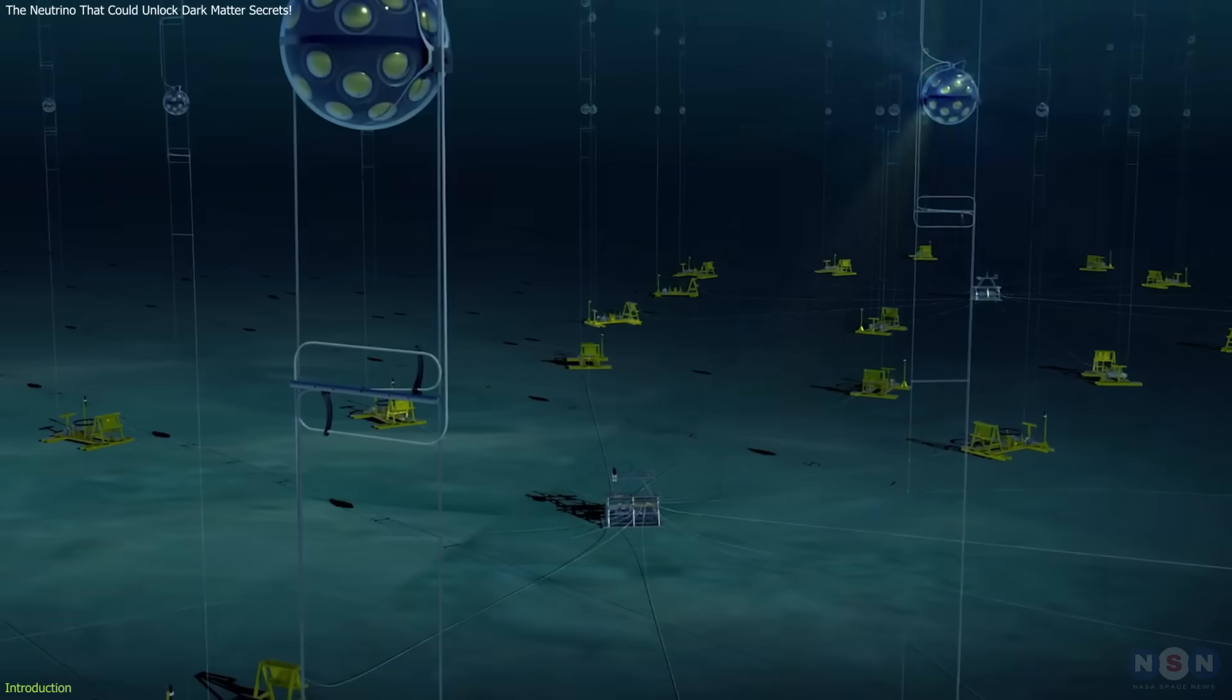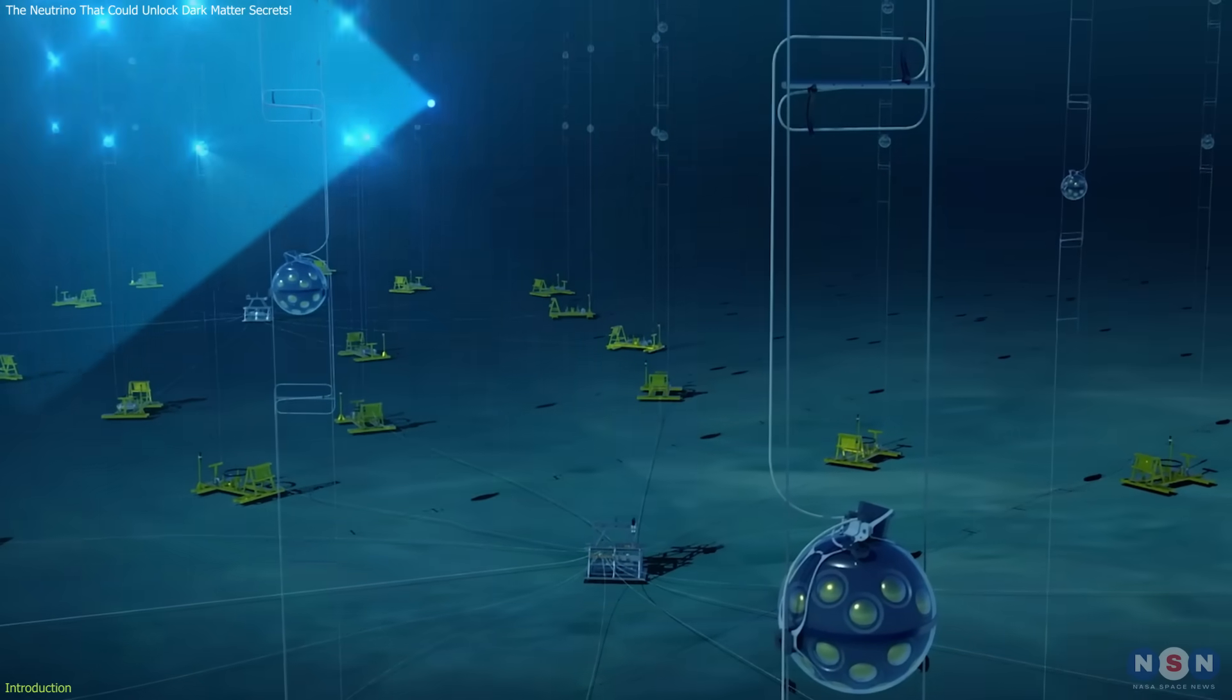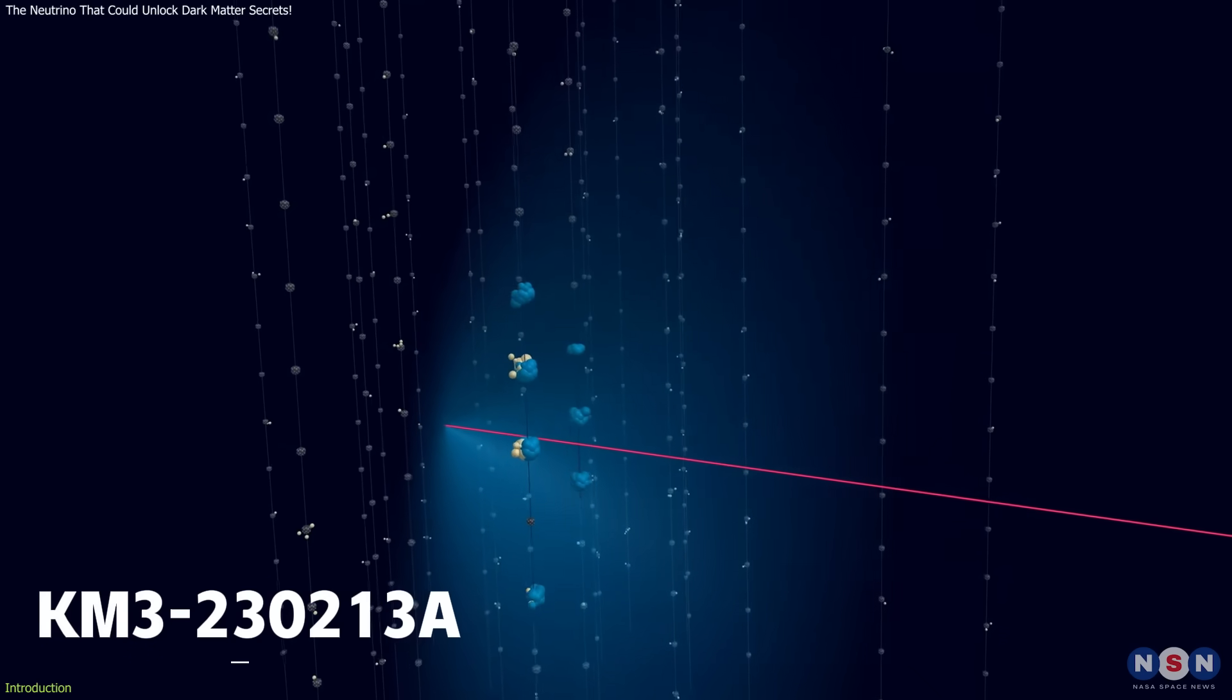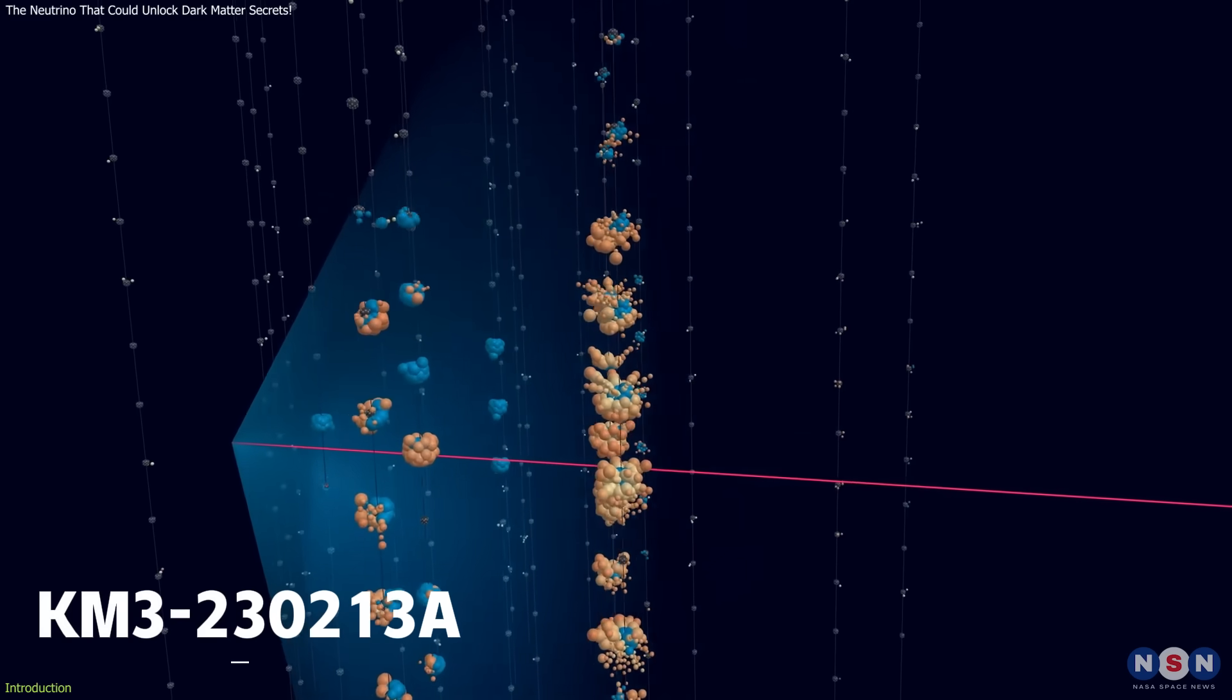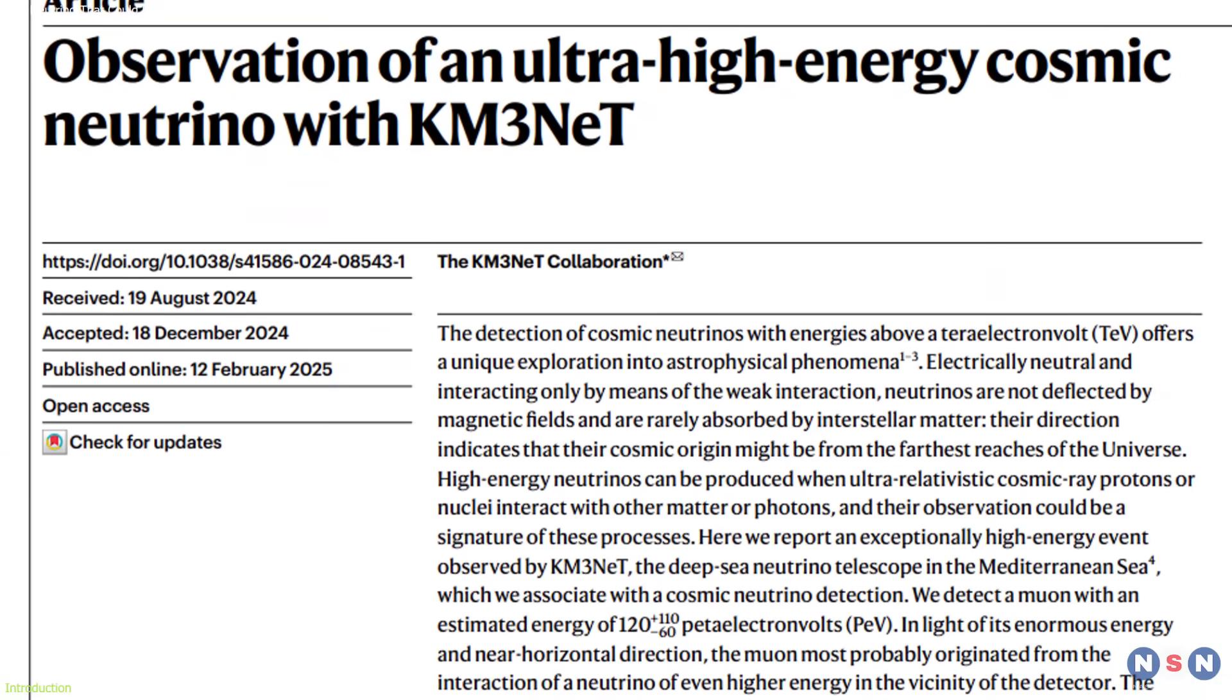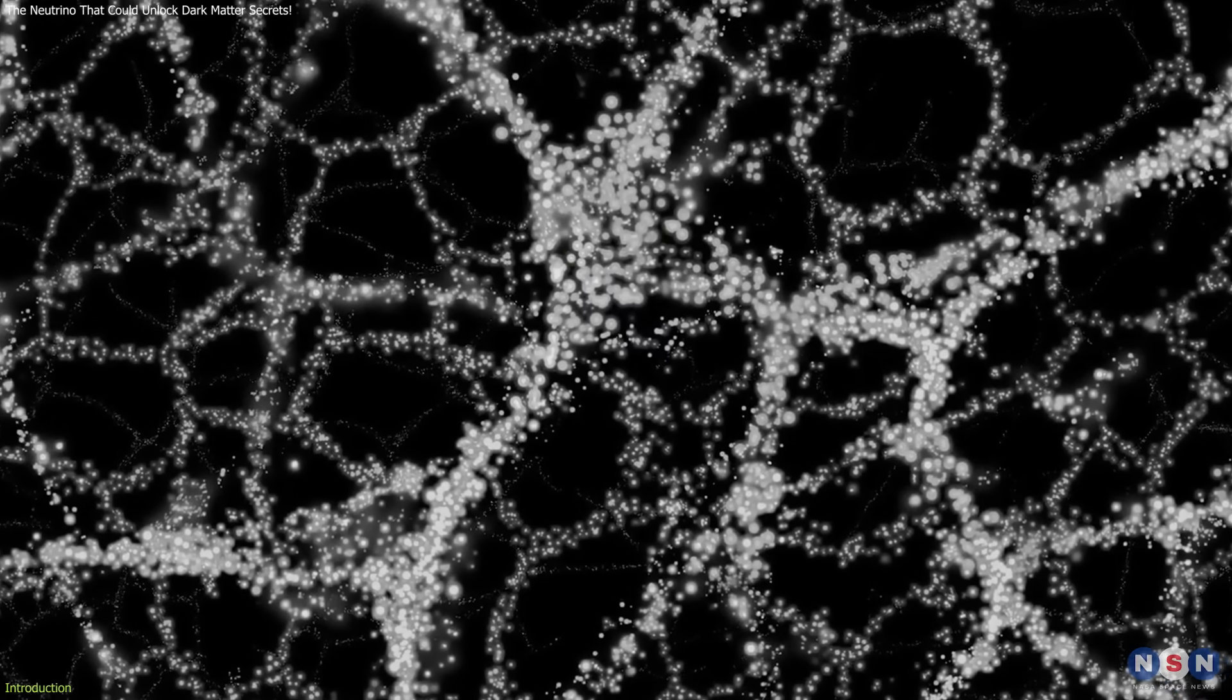In early 2023, the KM3Net Neutrino Observatory detected an incredibly high-energy neutrino, KM3-230213A, with an energy of 220 PEV, setting a new record. This discovery has sparked discussions about its origins, with some suggesting it could provide the first evidence of dark matter.